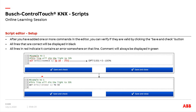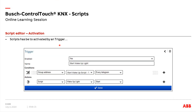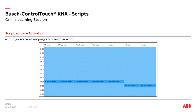Scripts need to be activated. Activation can be done via a trigger — creating a trigger with an extra group address so that whenever a telegram is sent to that address, a specific script starts. For example, for each telegram sent to 'start wake-up script', we start the 'wake-up light' script. Scripts can also be activated by adding them to scenes or time programs — for instance, every morning at 8 o'clock the wake-up light starts. Scripts can also be activated by another script.